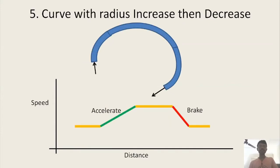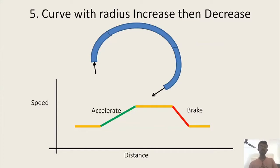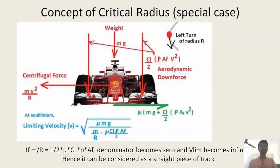The final Case 5 is a combination of increasing and then decreasing radius. You enter a sharp corner, the curve widens with increasing radius, then tightens again. You start with minimum velocity, accelerate into the next section, maintain that speed, then brake into the sharpest upcoming corner to maintain its limit speed. There is also another special case known as the concept of critical radius.